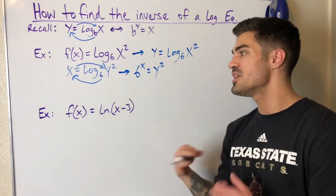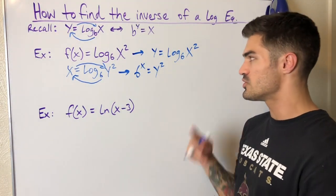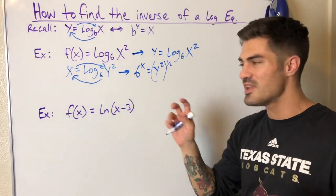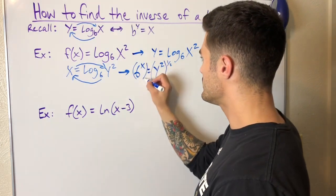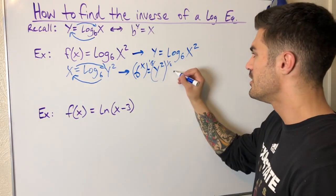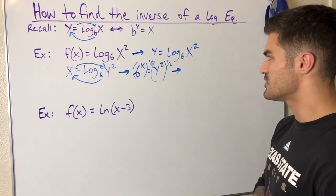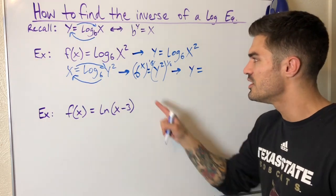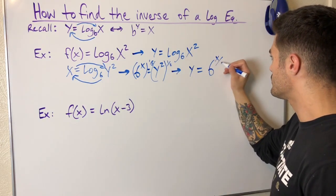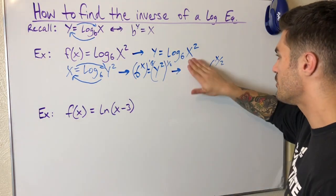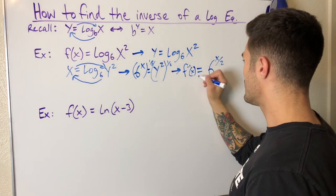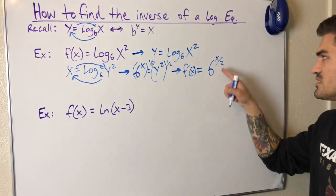I can rewrite it in exponential form: 6 to the x equals y squared. Now I'm trying to solve for y, so I just have one more step, and that is to basically square root both sides. I'm going to think of it as raising both sides to the one-half power. I raise this to the one-half power and that cancels the squared, and I can raise this to the one-half power as well. Since I have a power to a power, I multiply. So my final inverse function is going to be y equals 6 to the x over 2.